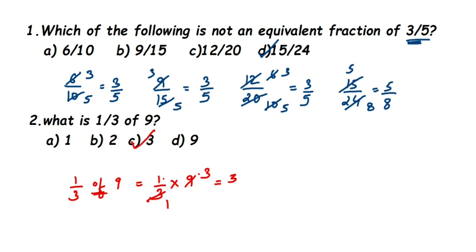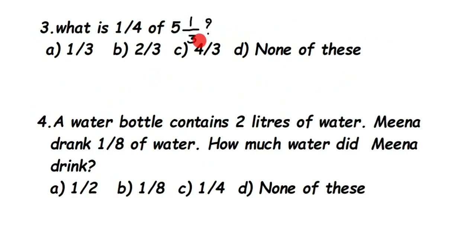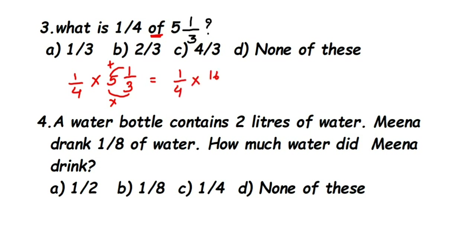Third question: what is one fourth of 5⅓? Previously it was a whole number; now we have a mixed fraction. 1/4 of 5⅓ means multiplication: 1/4 × 5⅓. Convert the mixed fraction to improper: 3×5=15, plus 1 gives 16, so it becomes 1/4 × 16/3. Cancel 4 and 16: 4×1=4 and 4×4=16. We're left with 4/3, which is option C.